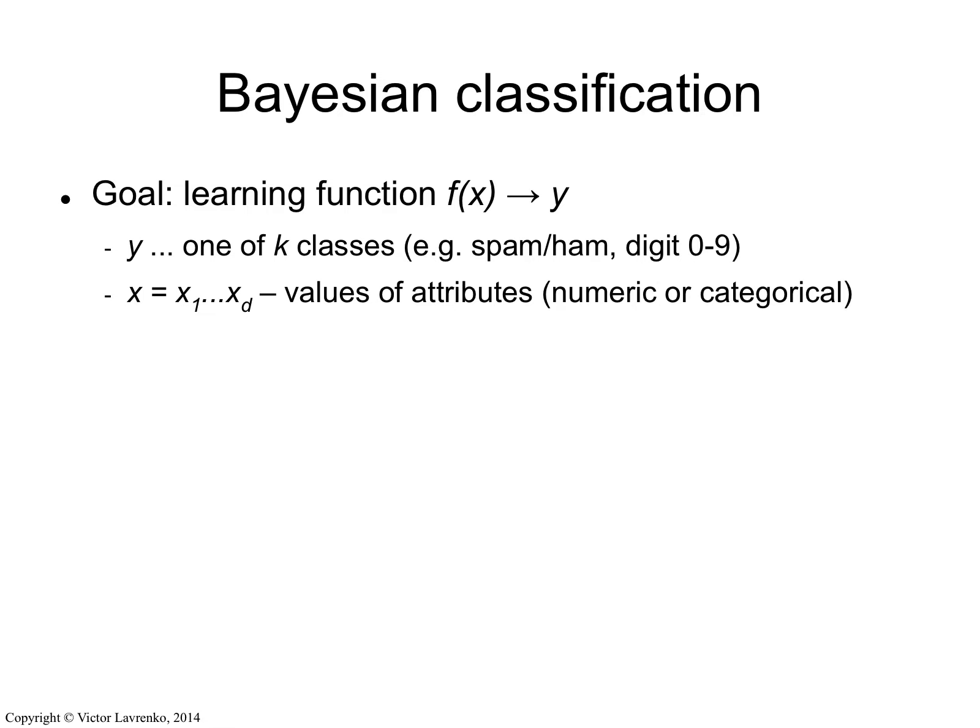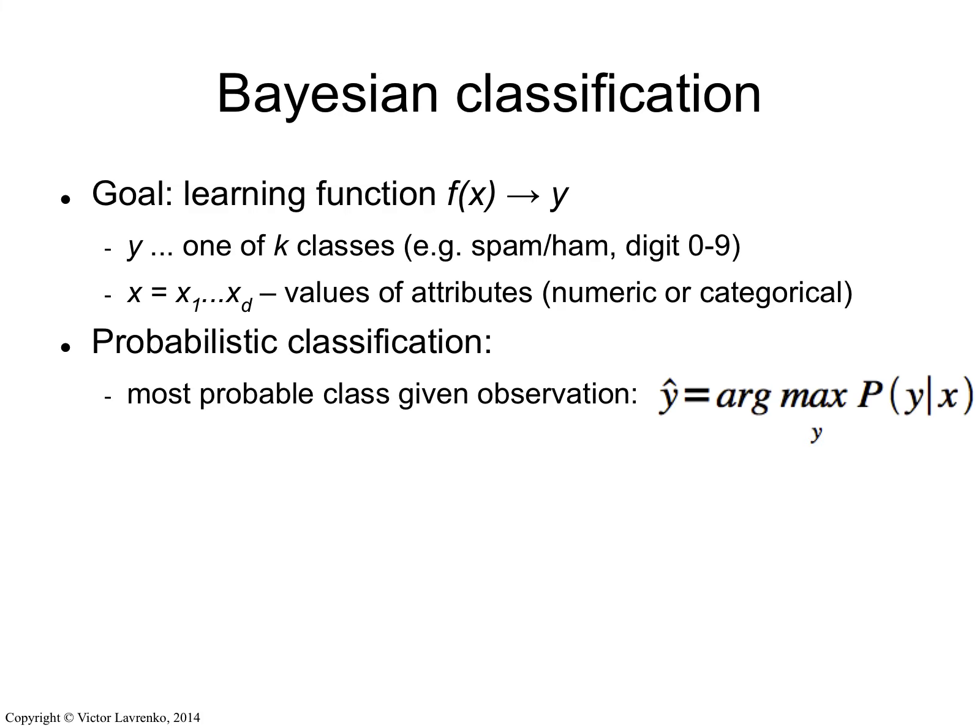So if we're detecting spam, there's only two possible values for y — it's either spam or non-spam. If we're trying to recognize digits, there are ten possible values: digit 0, digit 1, digit 2, and so on. So it's classification — one of a small number of classes. And our x is the representation of the data that comes in. If it's an email, it's the words in that email — we talked about how to represent an email as a bag of words. If it's a digit, then it's a bitmap and the pixels that go along with it.